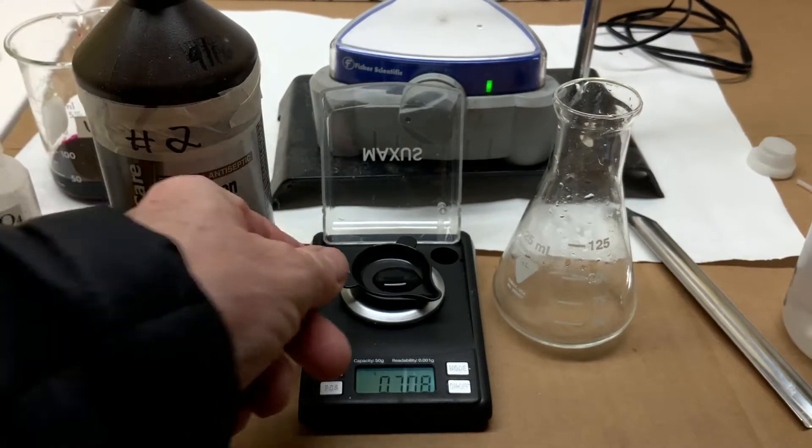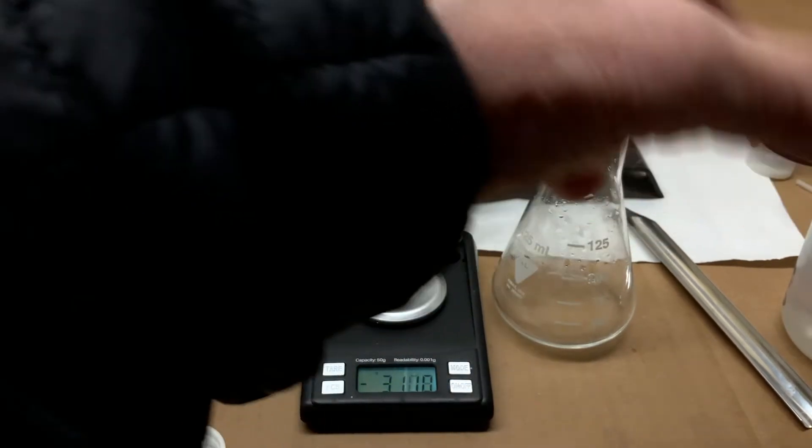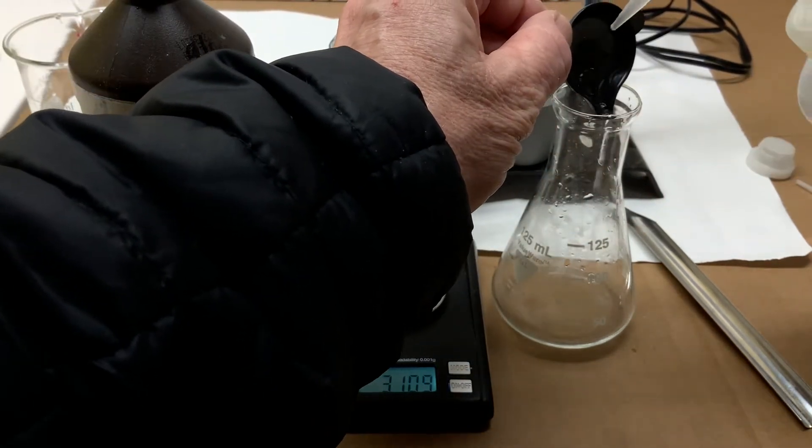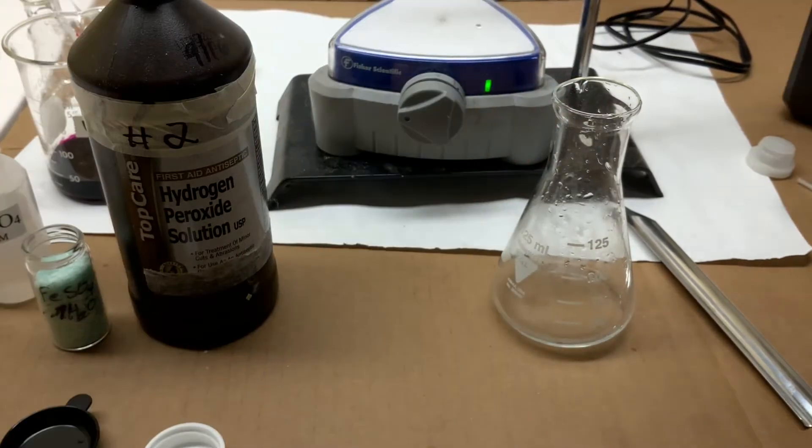I couldn't weigh the hydrogen peroxide in the flask because this balance didn't have a high enough capacity for the flask to be placed on it, so we'll transfer the peroxide to the flask using the wash bottle.